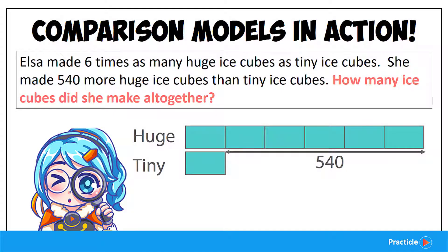See the keyword 'altogether'? This is the same as saying that we need to find the total number of the huge ice cubes and the tiny ice cubes. So how do we do that? To find the total, we'll first need to find how many ice cubes one unit represents. So let's make use of our model to help us with that.